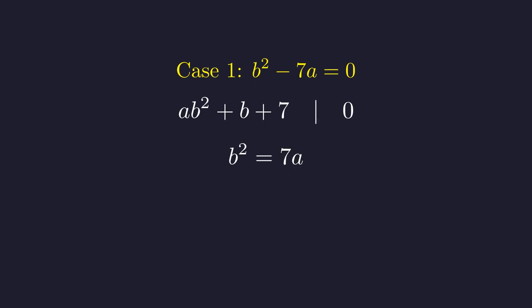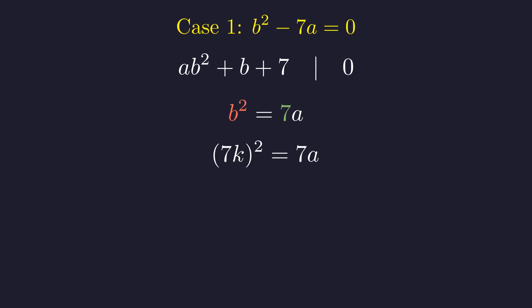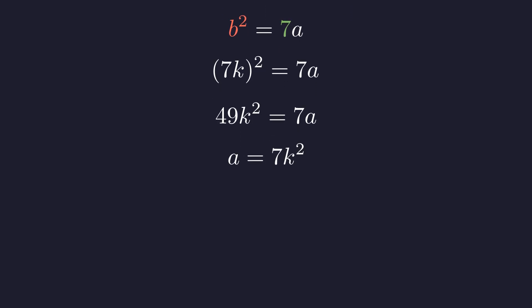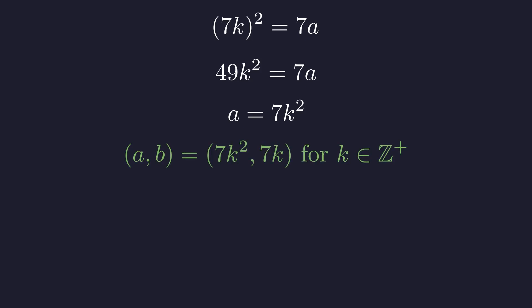The equation b squared equals 7a implies that b squared must be a multiple of 7. Since 7 is a prime number, if 7 divides b squared, it must also divide b. Consequently, we can express b as 7k for some positive integer k. Substituting b equals 7k gives 49k squared equals 7a, so dividing by 7 yields a equals 7k squared. This gives us an infinite family of solutions: the pairs (a, b) are of the form (7k², 7k) for any positive integer k. For example, k=1 gives (7, 7) and k=2 gives (28, 14).